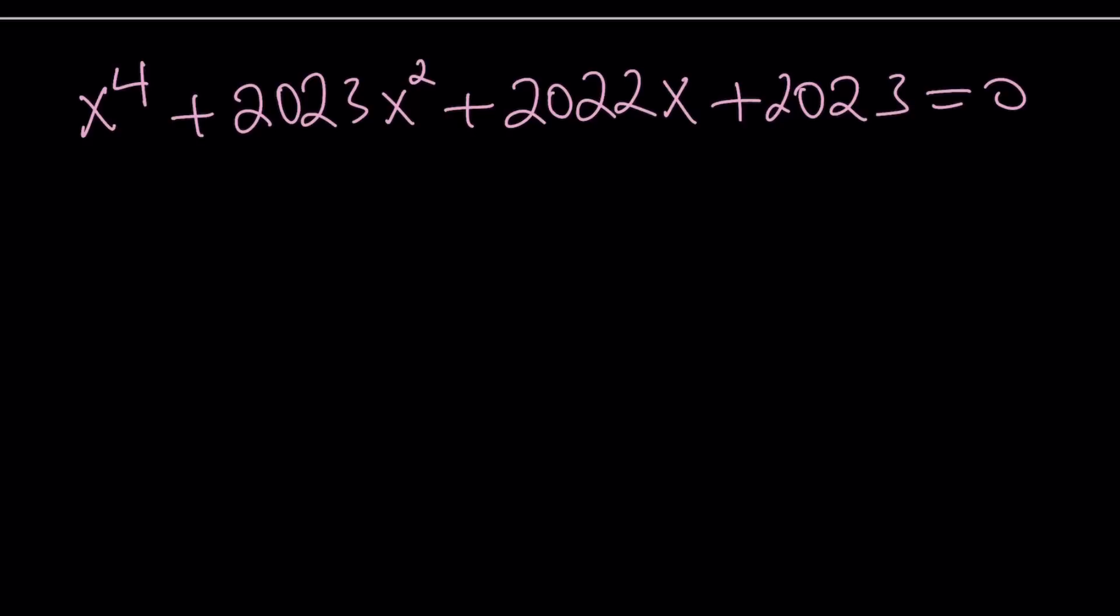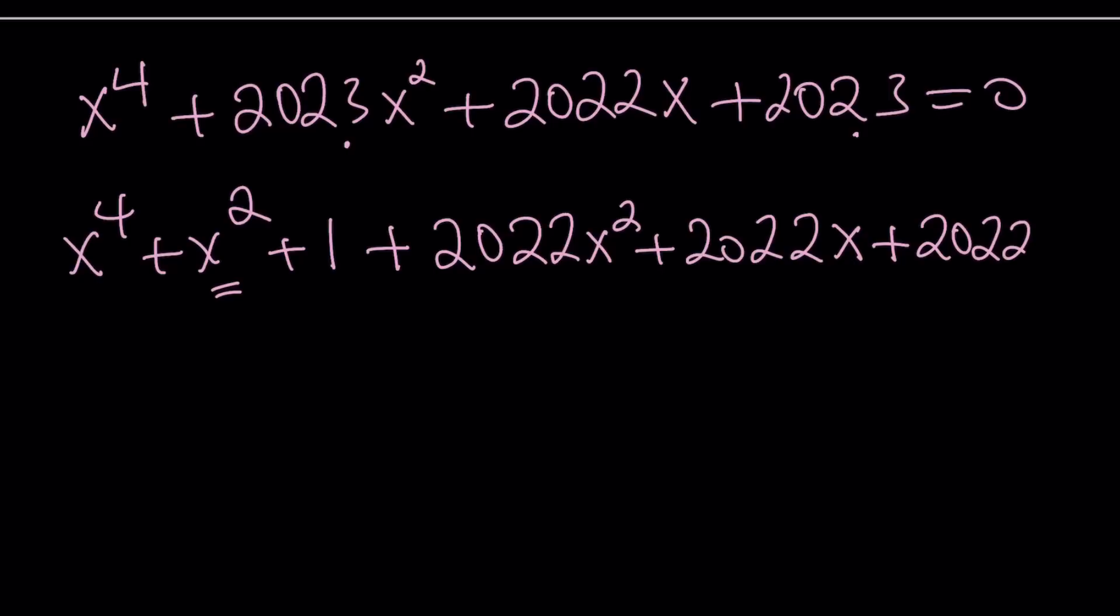We're going to break this down. I'm going to borrow one of the x squared. So it's going to be x to the 4th plus x squared. And I'm also going to borrow one of the constants, which is 1. That leaves us with 2022 x squared, because I got one of them right here, plus 2022 x unchanged, plus 2022, because again, I borrowed one of the constants.